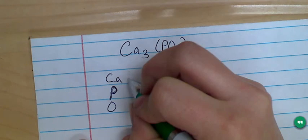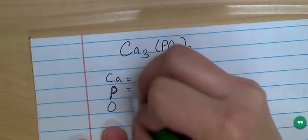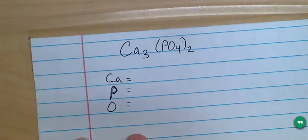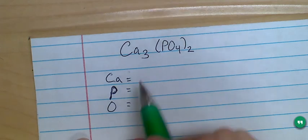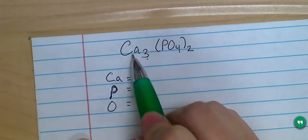Then I'm going to list how many atoms of each element I have here. So I see this subscript 3 next to that calcium. That tells me I have 3 calcium.